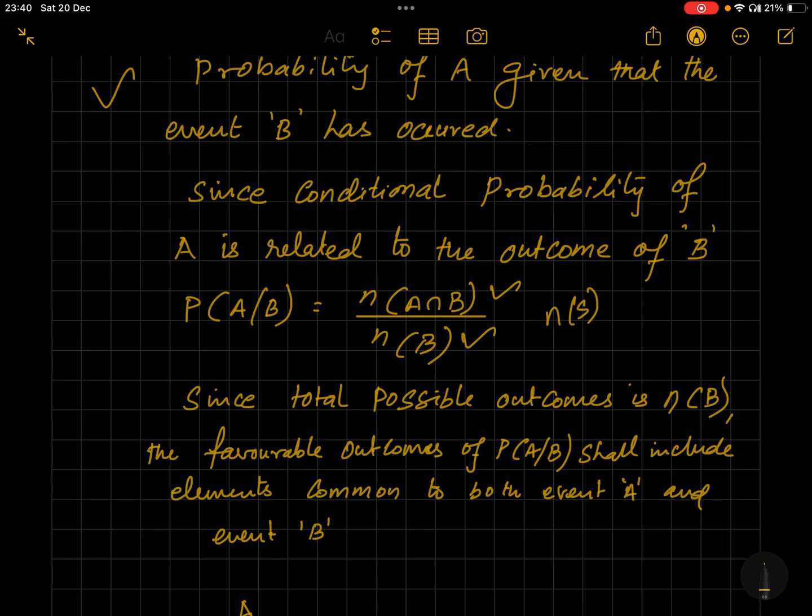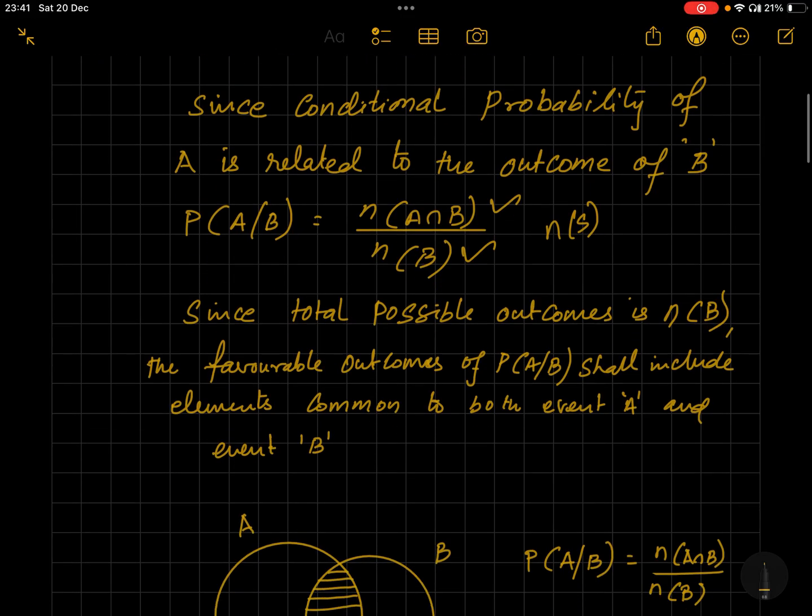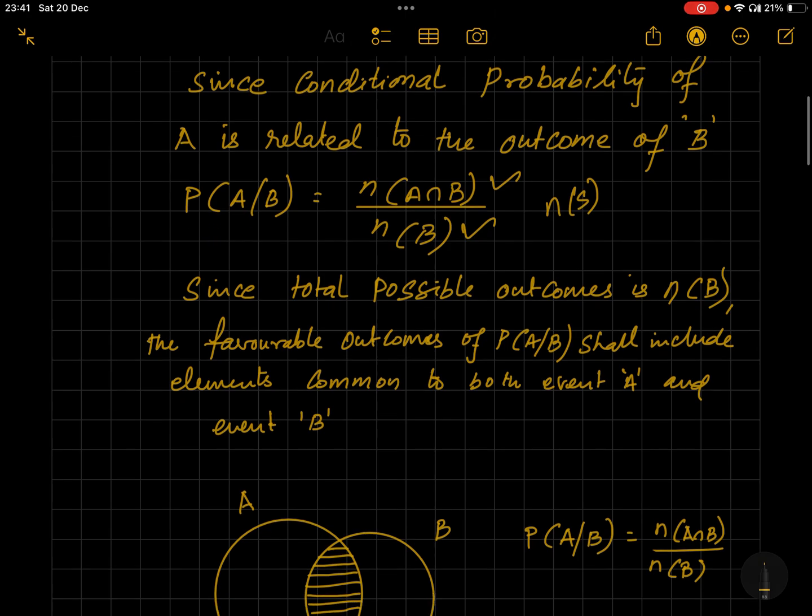Because we are restricting the sample space to B only, because the conditional probability of A depends entirely on the happening of B, not on any other elements of n(S).